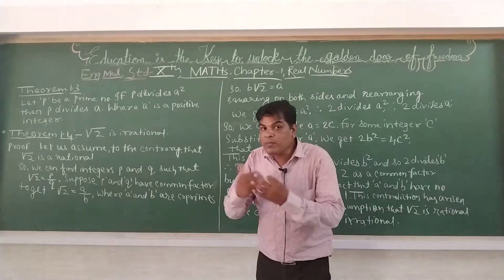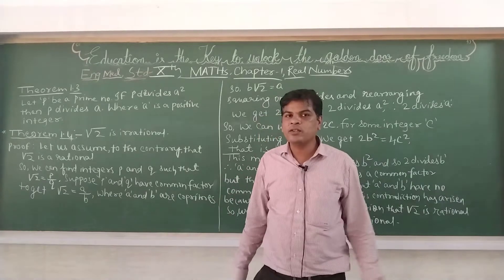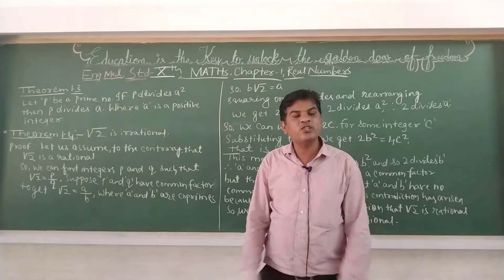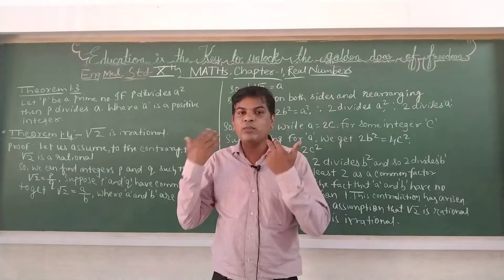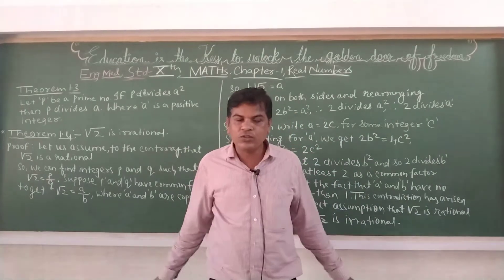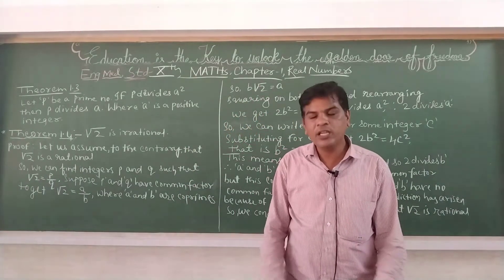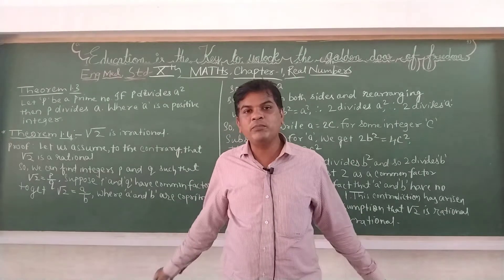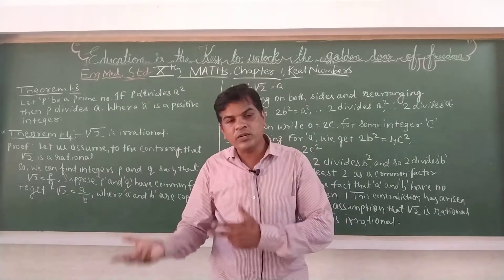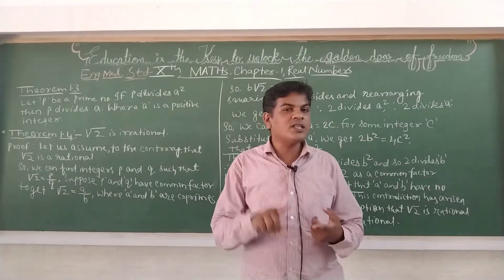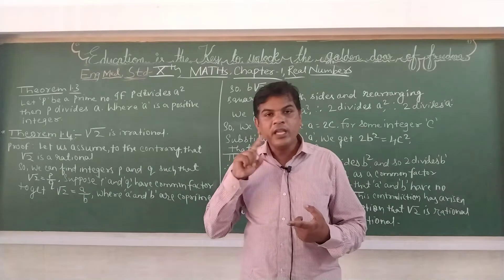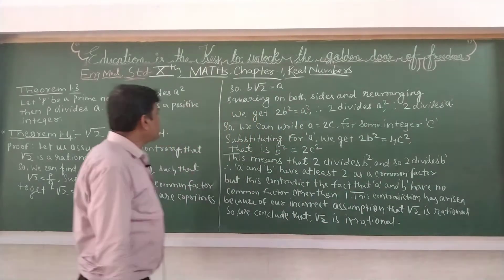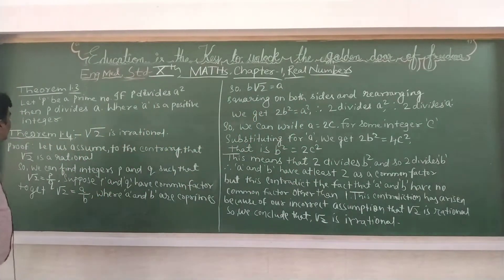But what do you mean by irrational number? Just contrary to the rational number — an irrational number is the number which is not in the form of P upon Q, i.e., jo P upon Q form mein na ho.